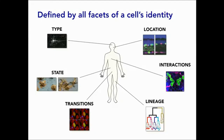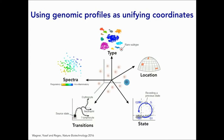In this process, we learned that there are many different facets to a cell's identity, including their types, their states, their history of transitions and lineage, where they're located in the body, and what other cells they interact with. It was increasingly clear that molecules have to underlie all of these different facets, and if this is the case, then we would expect that genomic profiles could maybe form a unifying set of coordinates.